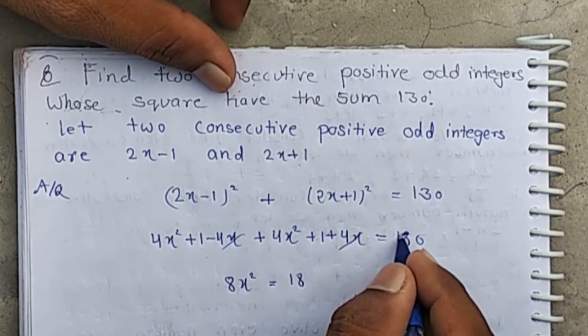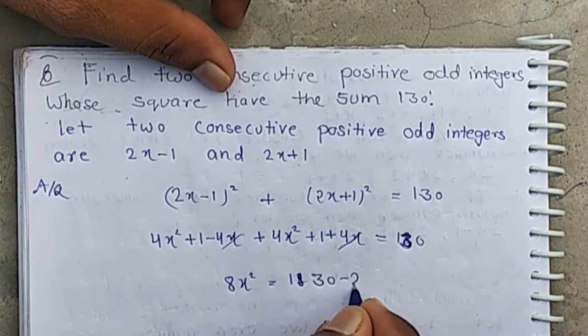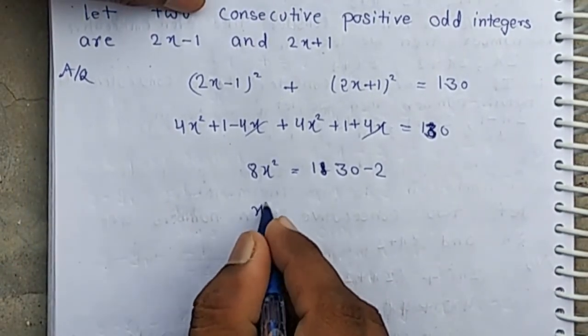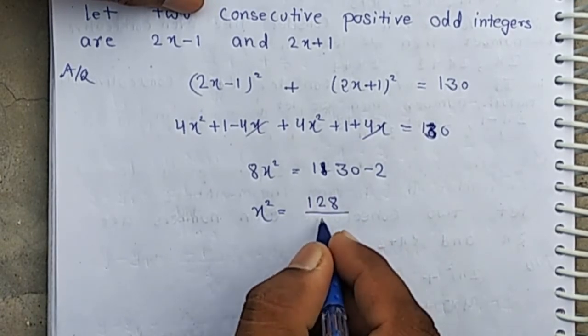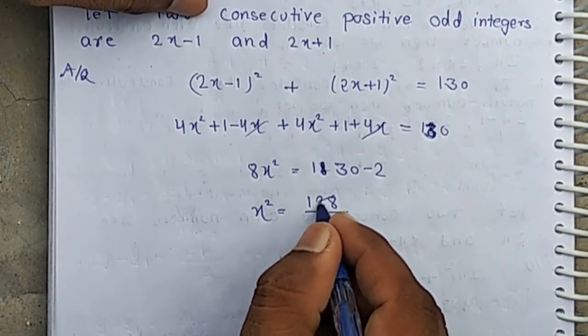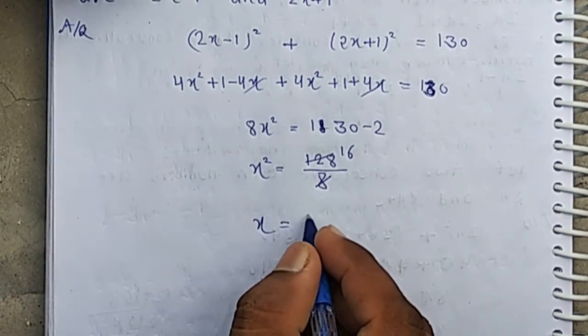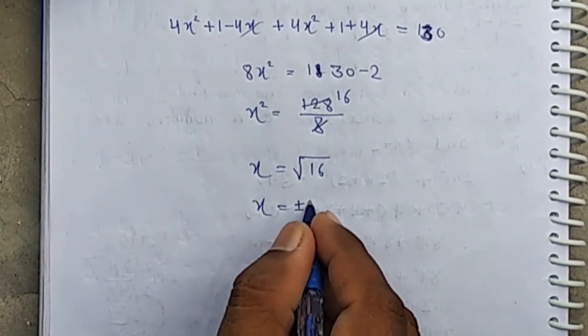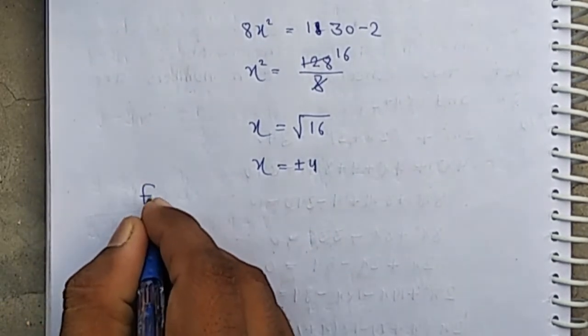It is 130, 130 minus 2 means... x equals square root of 16, means x equals plus or minus 4. We consider x equal positive 4.